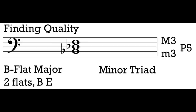Our minor triad has a minor third between the root and the third, a perfect fifth between the root and the fifth, and a major third between the third and the fifth. A minor triad is another very common triad — when we don't hear major triads, chances are we're hearing minor triads in a lot of the music we listen to. Notice the difference between the minor triad and the major triad — it's a subtle one. The minor triad starts with a minor third on bottom; the major triad has a major third on bottom. That first third between the root and the third is going to be useful for us to remember.